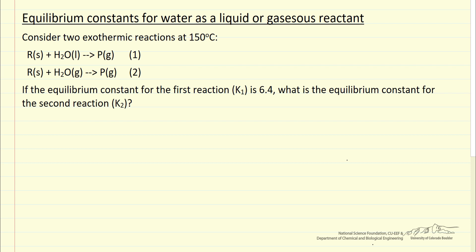In this problem we're given that we know the equilibrium constant for the first reaction, we've called that K1, it's equal to 6.4, and we want to know the equilibrium constant for the second reaction. The difference between these two reactions is that in one case water is a liquid, in the other case water is a gas.